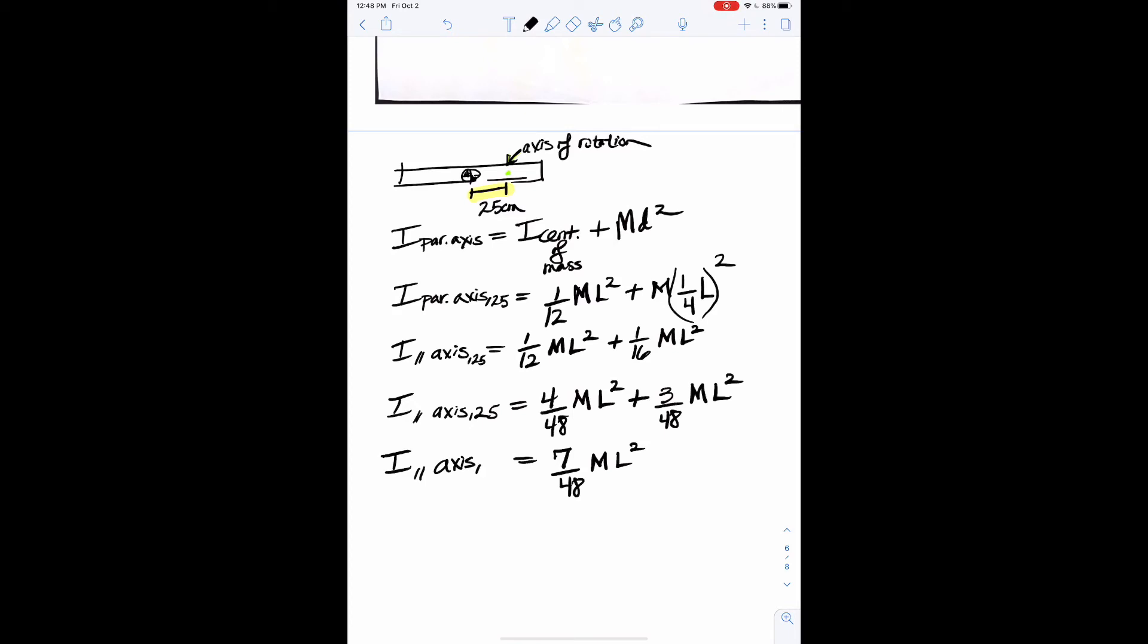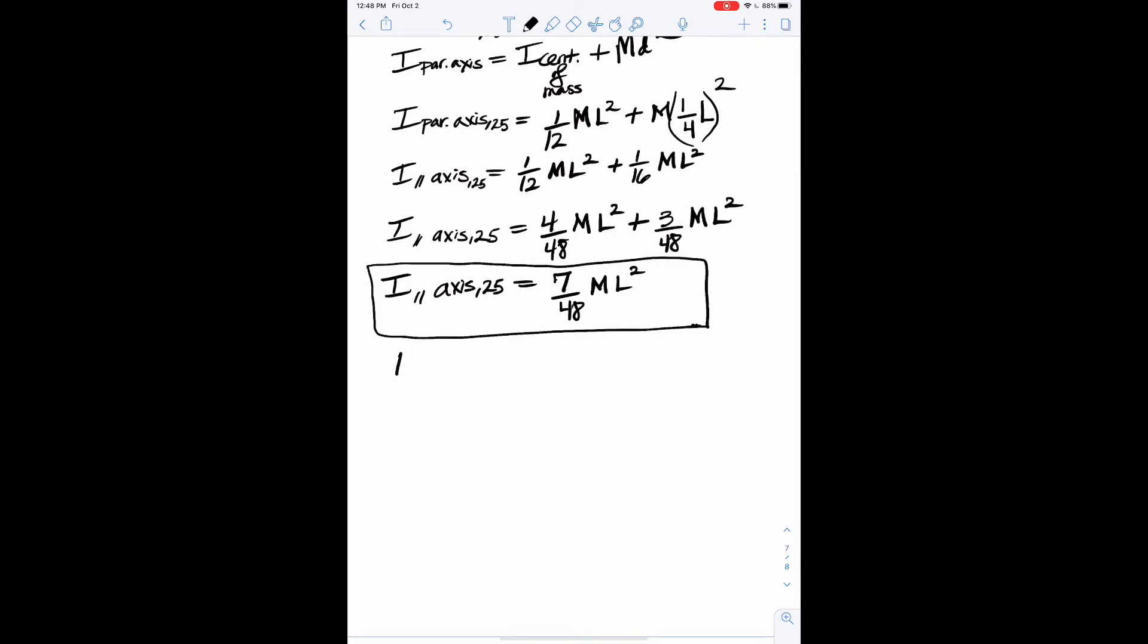All right. Okay. So we're going to then common denominator this. This is going to be 4 over 48, multiply top and bottom by 4. And this is going to be 3 over 48. 7/48ths ML squared. All right. That's cool, I guess. What did it prove? Well, if we think about that. When we were at the center of mass, I'll call it I center, it was one-twelfth ML squared. So did it get larger or smaller? When we moved the axis of rotation out away from the center of mass, and you would say it got larger, because one-twelfth is smaller than seven-forty-eighths.